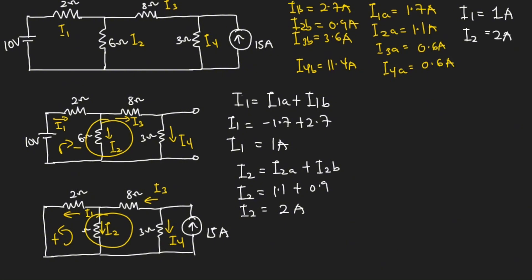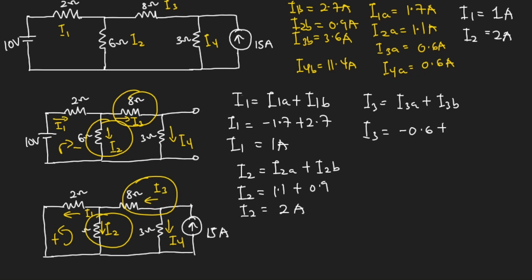Now for I3: I3 equals I3A plus I3B. When considering the 10 volts this was the direction, and when considering the 15 amperes it was in the opposite direction. So I3A is a negative value. Therefore I3 equals minus 0.6 plus 3.6, giving us I3 equal to 3 amperes.